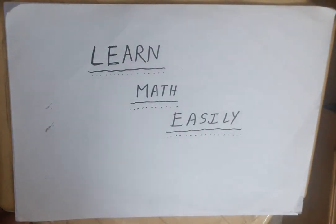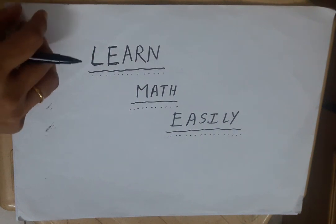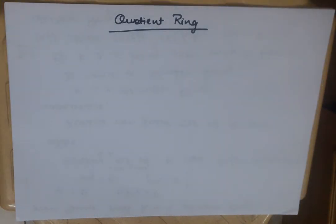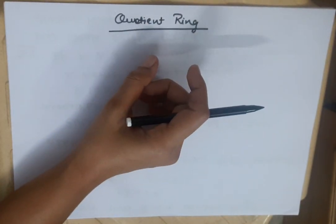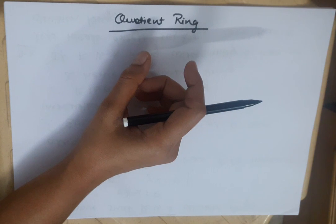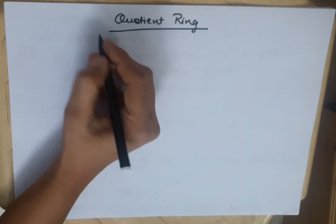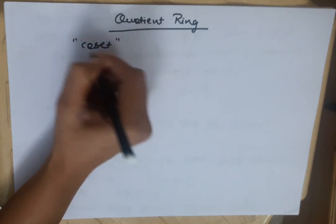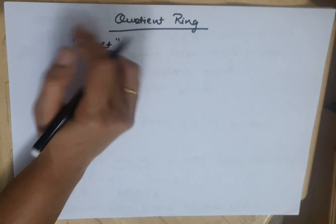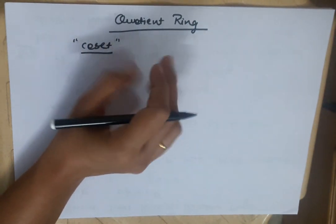Hello, welcome to your channel Learn Matizini. In today's video, we are going to start the main topic of ring theory which is called Quotient ring. I will explain it, but first of all, you have to revise the topic of group theory which is Quotient, because if you have that background, it will be very easy to understand today's video.